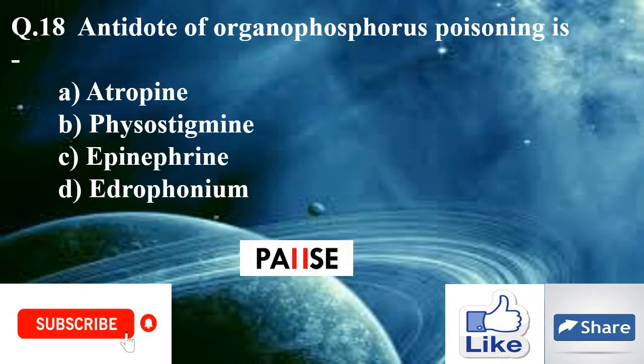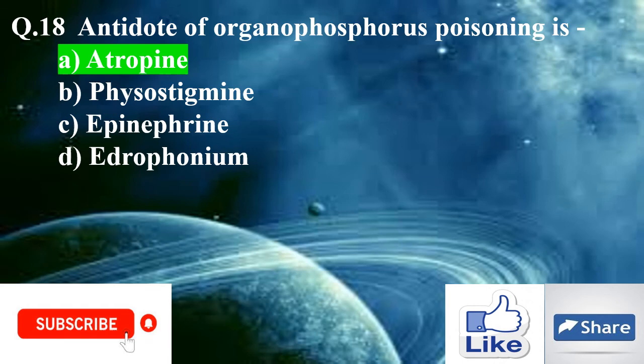Question eighteen: Antidote of organophosphorus poisoning is — option A: atropine, option B: physostigmine, option C: epinephrine, option D: edrophonium. The right answer is option A: atropine.